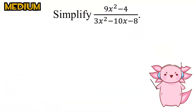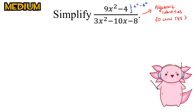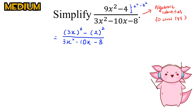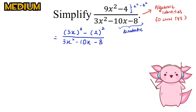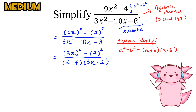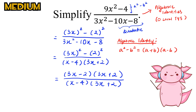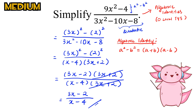This is a classic question on algebraic identities from the TYS. The numerator is in the a² minus b² form, so let's rewrite it as (3x)² minus 2². For the denominator, we factorize the quadratic to get (x minus 4)(3x plus 2). Using the identity a² minus b² equals (a plus b)(a minus b), it becomes (3x minus 2)(3x plus 2). We cancel out the (3x plus 2) from top and bottom to get the final answer.